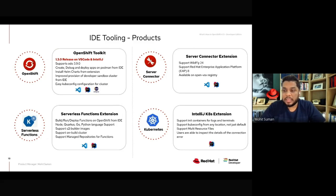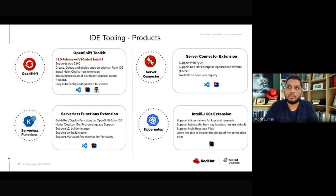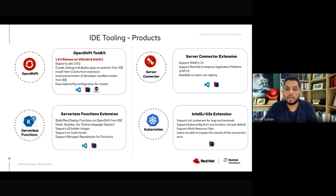The other extension we have improved is the Server Connector Extension, which allows users to work with their middleware runtimes. It has support for WildFly 24, the latest support for EAP 8, and it's also available on OpenVSX registries. So customers who want to work with middleware runtimes on top of Dev Spaces can install the Server Connector Extension directly from the OpenVSX registries.